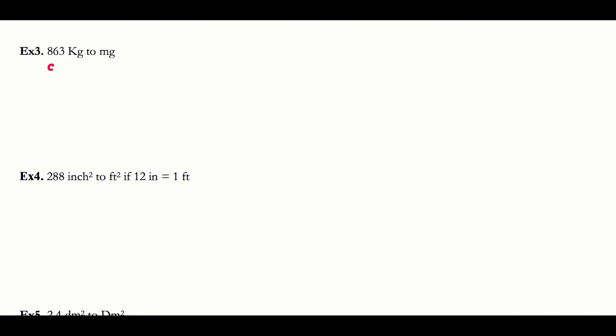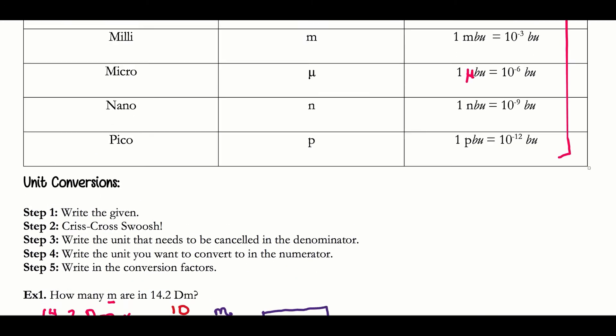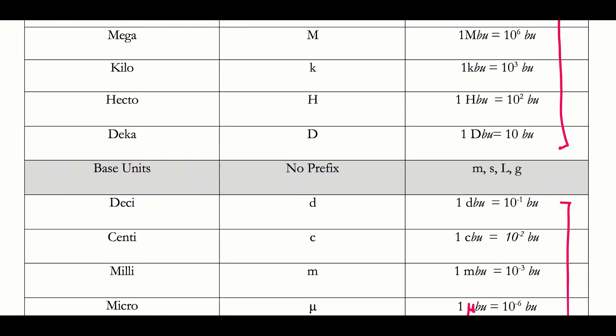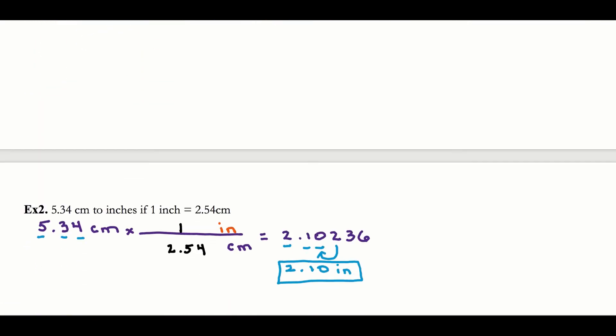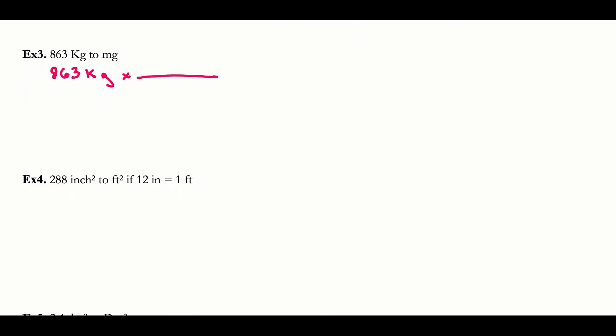Next example: 863 kilograms, converting to milligrams. My given is 863 kilograms. Crisscross swish. Here's the tricky part — looking at the prefix table, I know the relationship between kilograms and grams, and I know the relationship between milligrams and grams, but I don't know the direct relationship between kilograms and milligrams. This suggests a two-step problem: first convert kilograms to grams, then grams to milligrams.